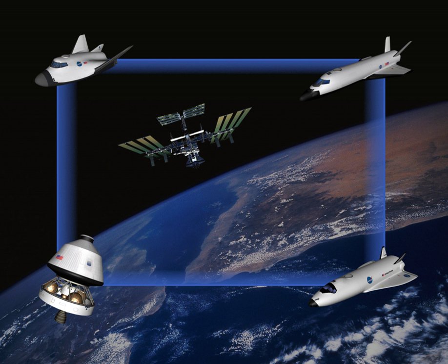The first variant of the Orbital Space Plane was designed to serve as a crew rescue vehicle for the ISS, replacing the previous plans for the ACRV. This early version of the plane had been expected to enter service by 2010. The Space Launch Initiative program began with the award of reusable launch vehicle study contracts in 2000, and in November 2002 it was evolved into the Orbital Space Plane program and the Next Generation Launch Technology program.